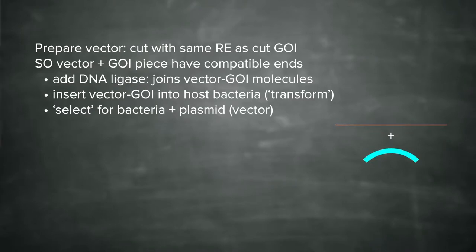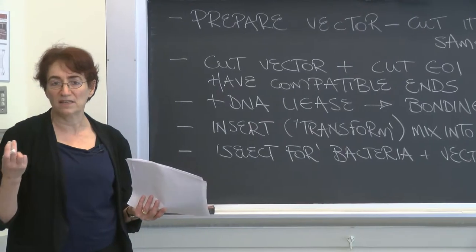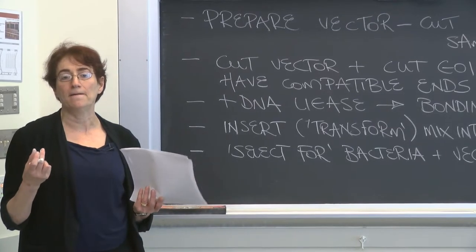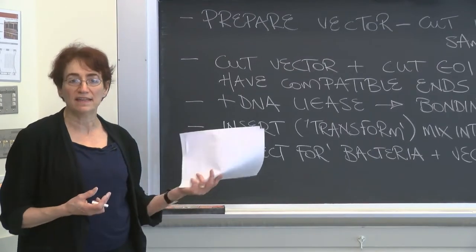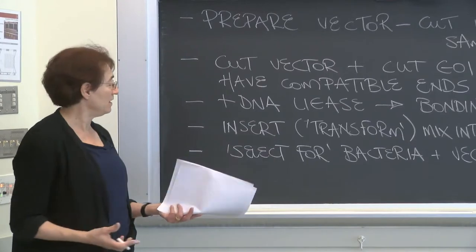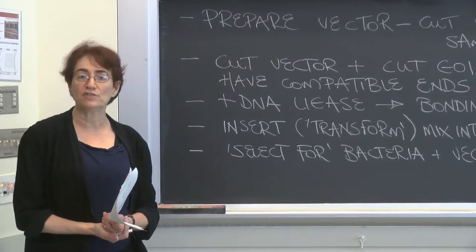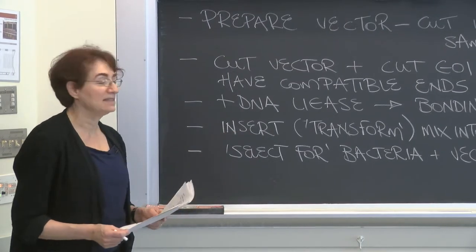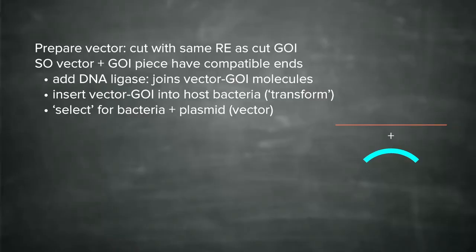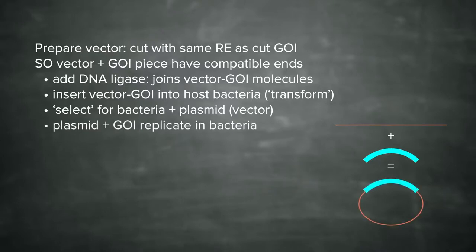Usually the selection is with a particular type of chemical that is an antibiotic. You put an antibiotic resistance gene into the plasmid, and that allows the bacteria that have the vector plus gene of interest to grow in the presence of antibiotics. You select for bacteria with the gene of interest, and this allows the vector plus GOI to specifically grow in the bacteria. You can then go ahead and isolate and use the DNA from this growth mix.